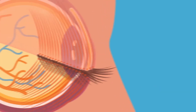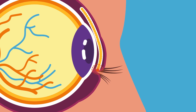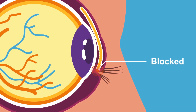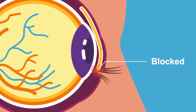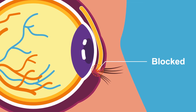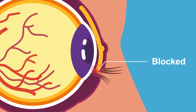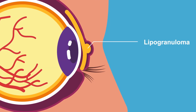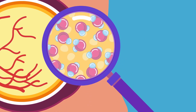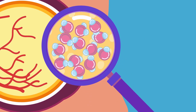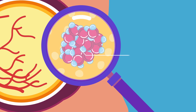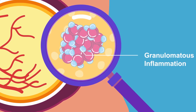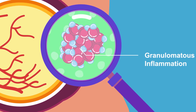If these meibomian gland orifices at the lid margin become plugged or blocked, the contents of the glands — meibum — start getting released into the tarsal plate and surrounding eyelid soft tissue, causing an inflammatory reaction. It is also called lipogranuloma because the retained lipid secretions cause aggregation of certain cells, causing granulomatous inflammation. It is sterile inflammation as there are no microorganisms causing infection.